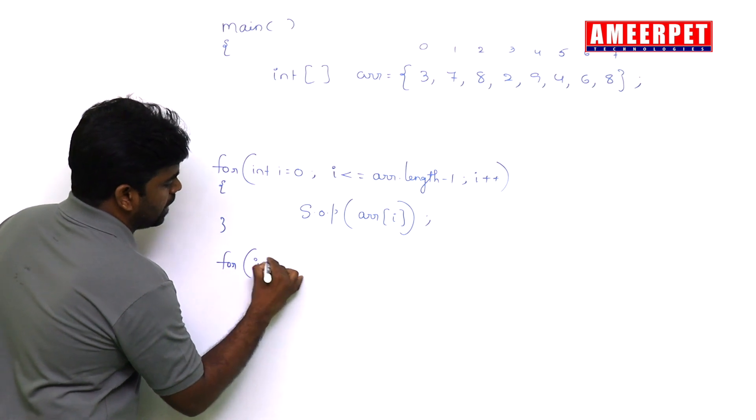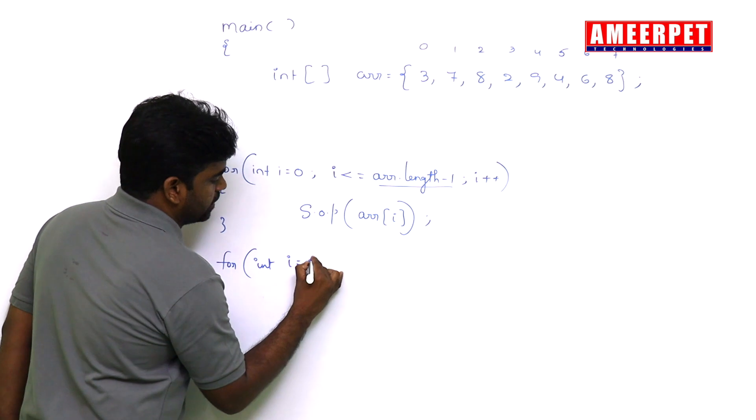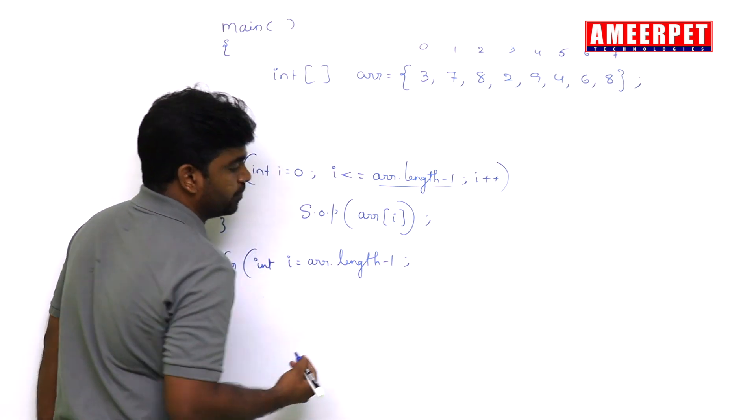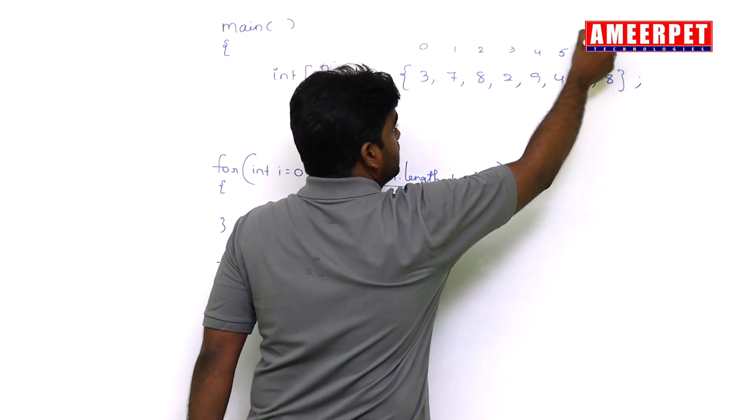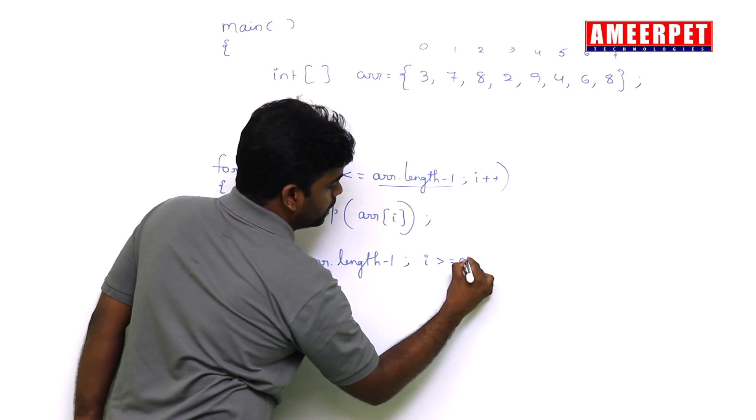For integer i equals to starting from length minus one, arr.length minus one, up to zero. It is in decreasing order now, so i greater than or equal to zero.